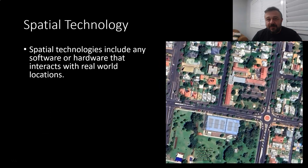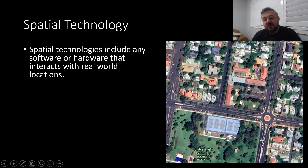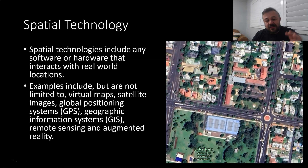Spatial technology looks like maps, but basically it's any software or hardware that interacts with real-world locations. For example, here is the school that I work at — and maybe the school you study at — and we've used Google Earth to interact with it. We can pull all sorts of information, take real-world measurements, create maps that filter out excess information to show just roads, schools, business sites, or houses. We've also got virtual maps, satellite images, GPS, remote sensing, and augmented reality — which by its very definition is a spatial technology.